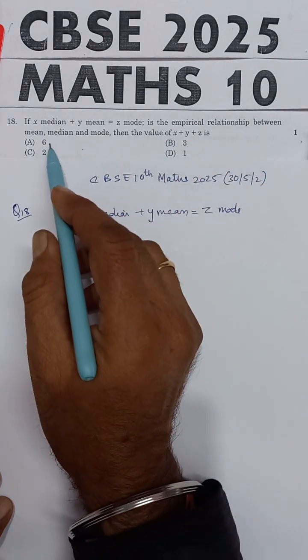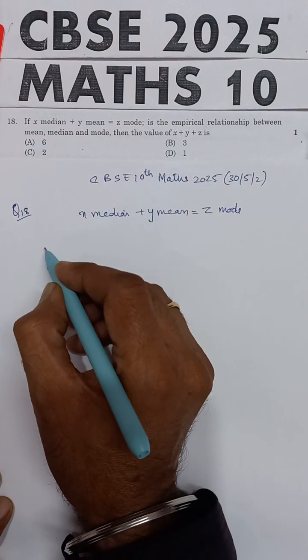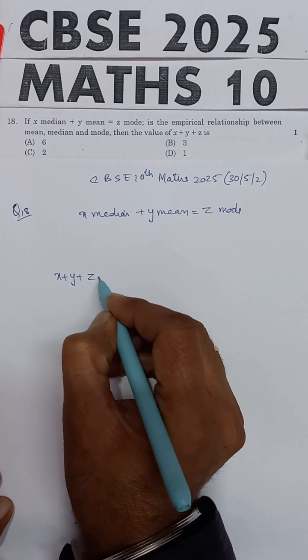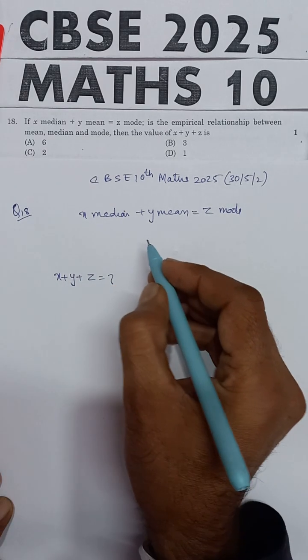is the empirical relationship between mean, median and mode, then find the value of x plus y plus z. Now we know the relationship between mean, mode and median: